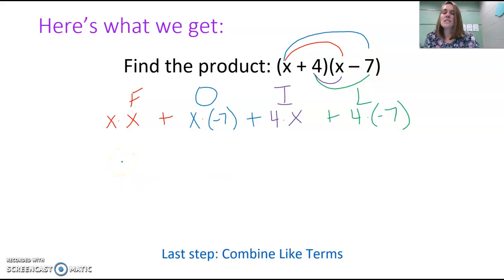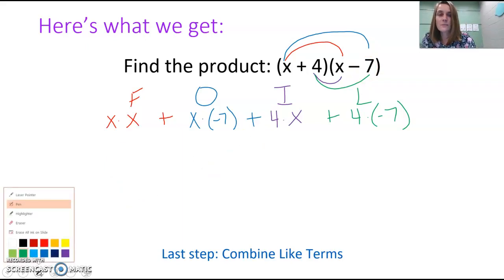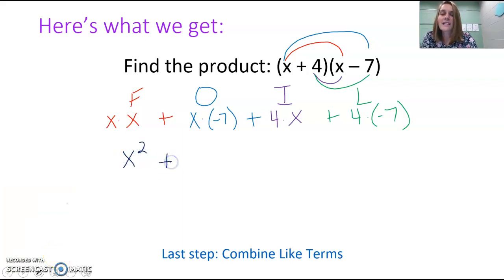Now we just need to simplify each one of those. If we simplify all of this, x times x is x squared plus x times negative 7 is negative 7x plus 4 times x is 4x plus 4 times negative 7 is negative 28.